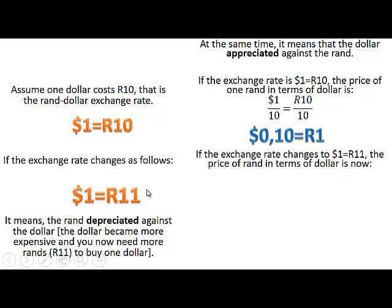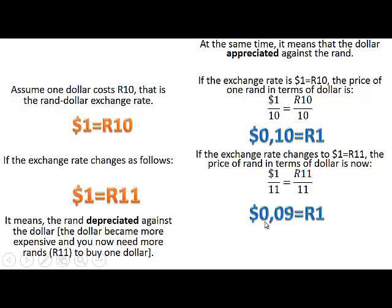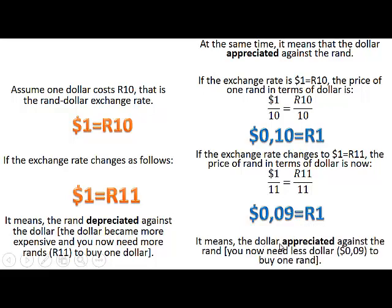Then the exchange rate changed to $1 equals 11 rand. We calculate the price of 1 rand in terms of dollars by dividing by 11 on both sides. So 1 divided by 11 is 0.09, meaning 9 American cents equals 1 rand. This means the dollar appreciated against the rand — you now need less dollars, only 9 cents instead of 10 cents, to buy 1 rand.